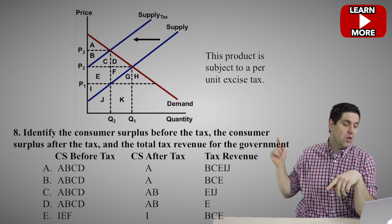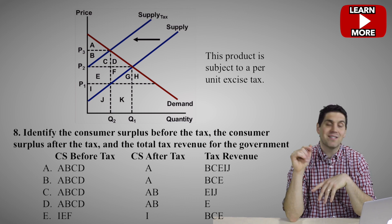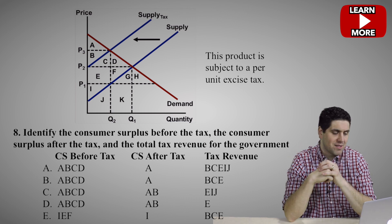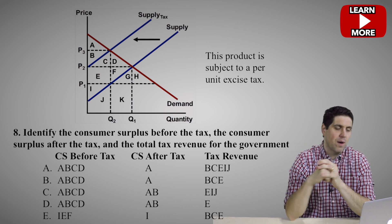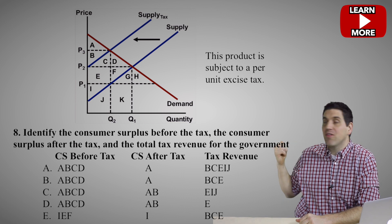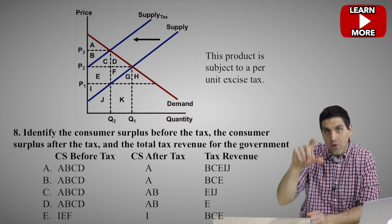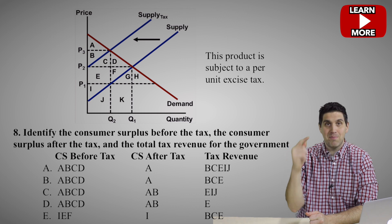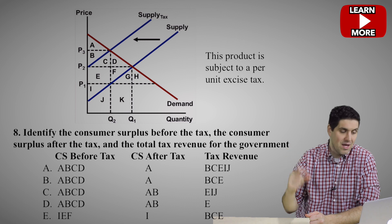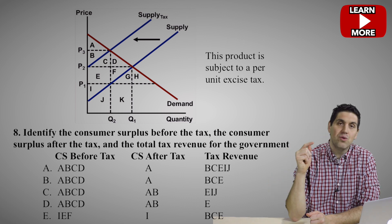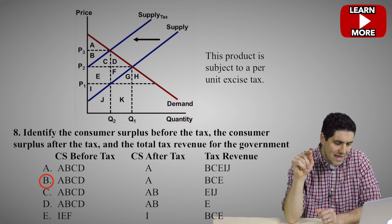After the tax, the price goes up to P3 when the supply curve shifts to the left. So the consumer surplus is now just A. The only right answer can be either A or B. Then the tax revenue box: consumers spent P3 — the new price — but producers only get to keep P1. The vertical distance between the supply curves is the amount of tax. P3 minus P1 is the tax per unit, times the new quantity Q2, gives you the tax box, which is B, C, E. The right answer is B.